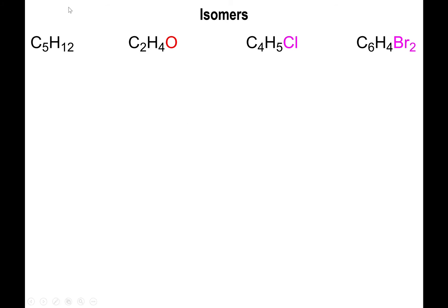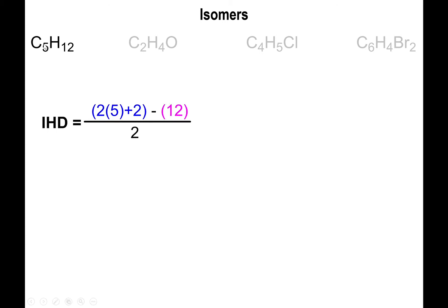We're going to start with C5H12 and apply the IHD formula. We have five carbons, so we multiply 5 by 2 and add 2, giving us 10 plus 2, which is 12. We have 12 hydrogens in the structure, so we subtract 12 from it and divide the whole thing by 2, and we end up with a value of 0 for the IHD.